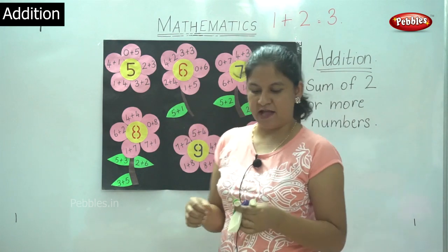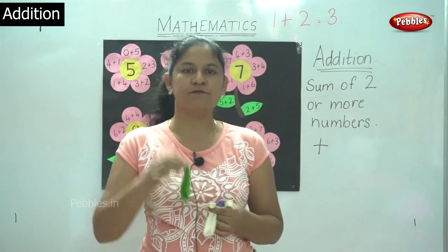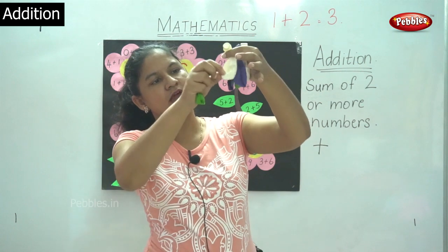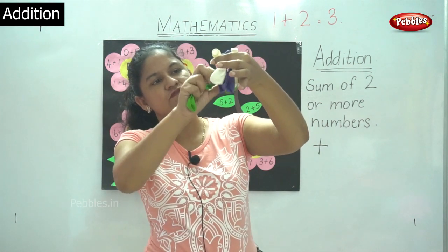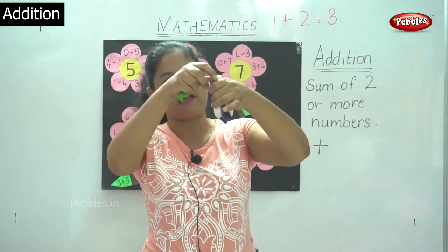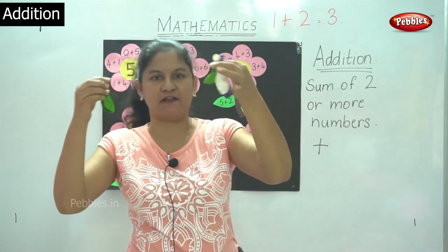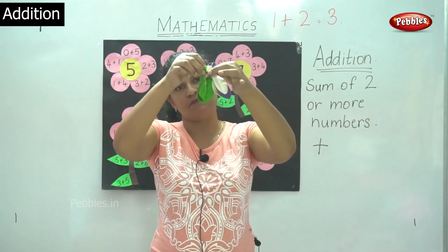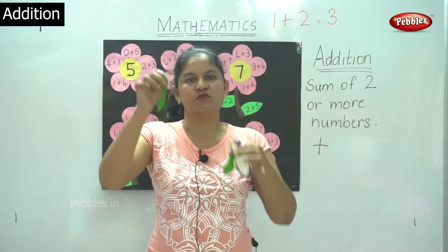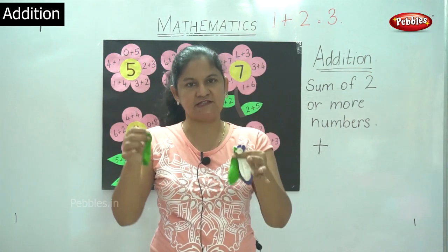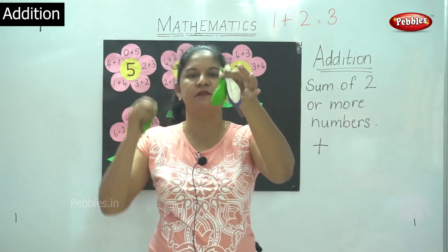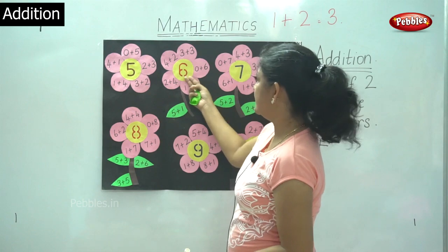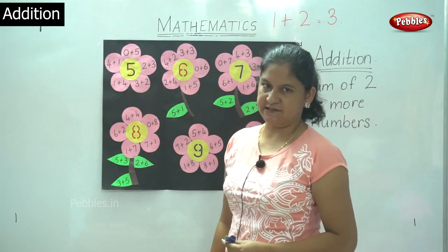And lastly, I have 1 balloon in my right and 5 balloons in my left. When I total up both I get number 6. So 1 plus 5 is 6 or 5 plus 1 is 6.